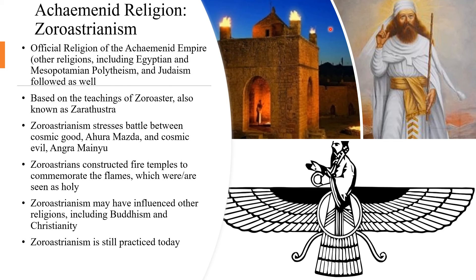Zoroastrianism, as a religion, stresses the battle between cosmic good — Ahura Mazda — and cosmic evil — Angra Mainyu. Zoroastrians constructed fire temples, shown here, where they commemorated the flames, which were and are seen as holy. Zoroastrianism may have influenced other religions, including both Buddhism and Christianity, and Zoroastrianism is still practiced today in parts of Asia and the Near East.